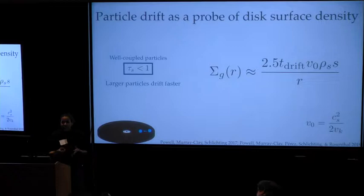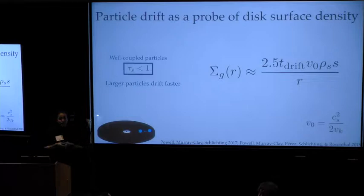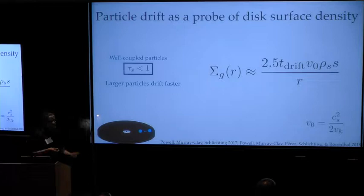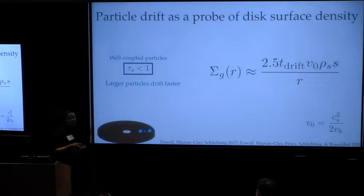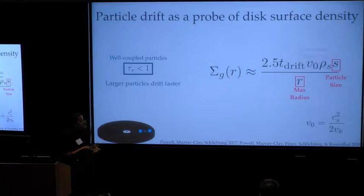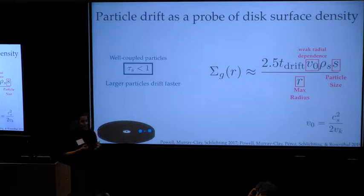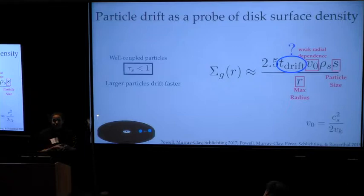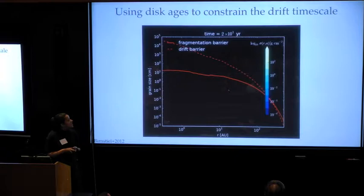So here on the right, I'm showing the same drift velocity but reformatted to be a drift timescale. This is in the Epstein regime for particles with stopping time less than one. I've just solved for the gaseous disk surface density. You can see that you can solve for this parameter if you know the particle size at a given radius. And it also depends on this parameter V naught, which is the ratio of the sound speed to the Keplerian velocity. So if we know the particle size at a given radius, we can solve for the total gaseous surface density if we know something about the drift timescale of the particle.